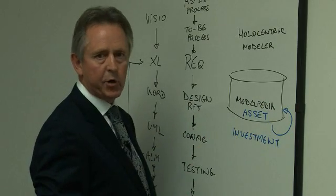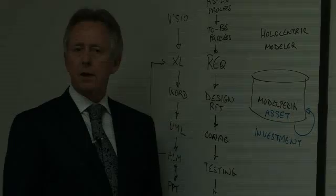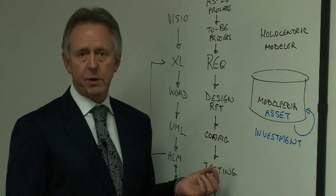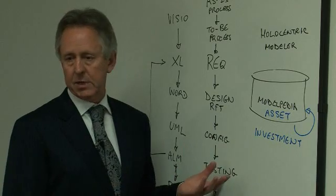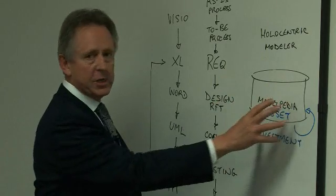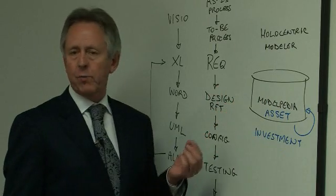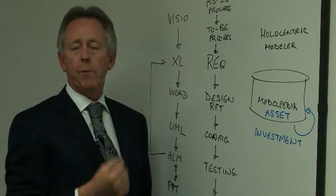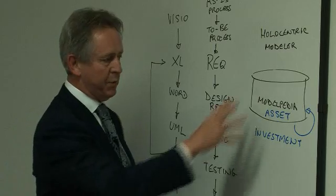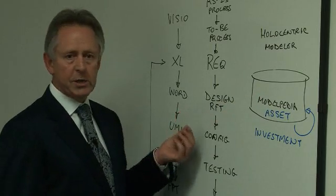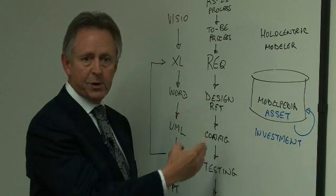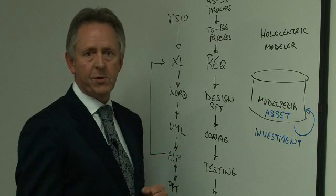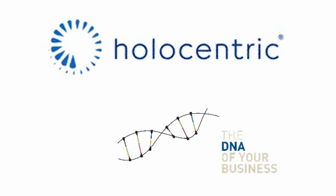In conclusion, at Holocentric we help increase the success rate of IT systems implementations and business transformation projects, as it's been experienced by many of our customers, such as Qantas and Western Power. Through a single repository that represents the corporate DNA of your organisation, we help to reduce the risk through the unnecessary translation between the different phases of the project. We help to increase the effectiveness through collaboration, through that single repository. We help to reduce the cost through the reuse of information through the various phases of the project. And we reduce the timeframe through the elimination of unnecessary rework. Thank you.